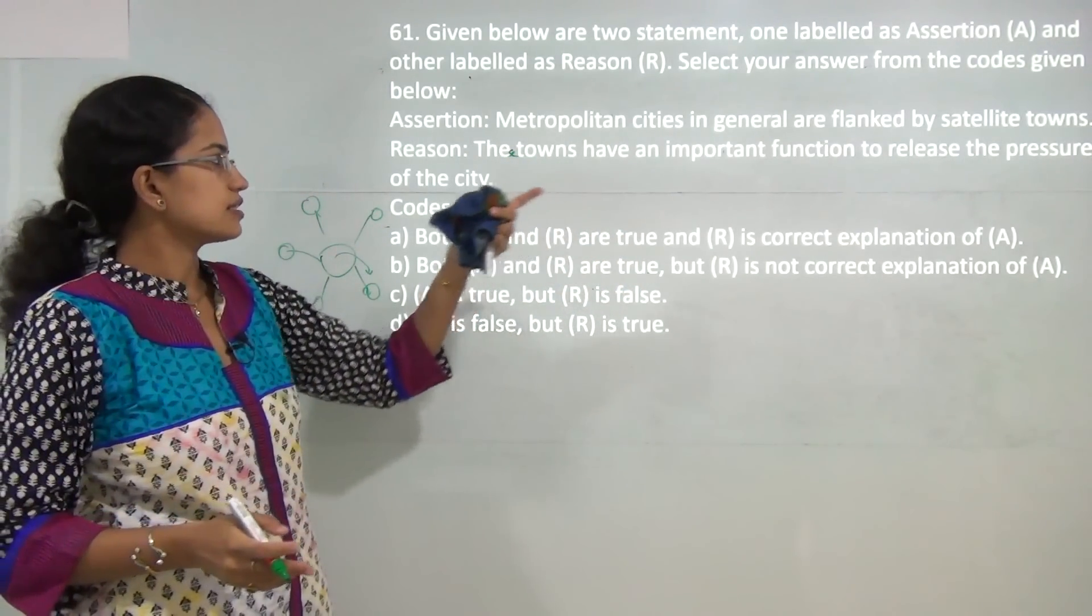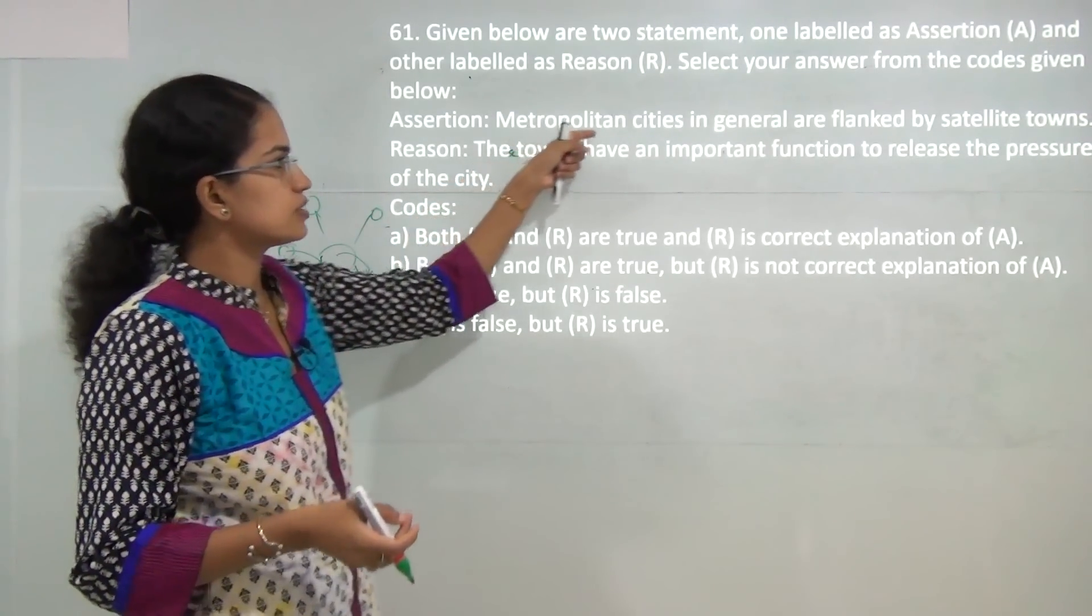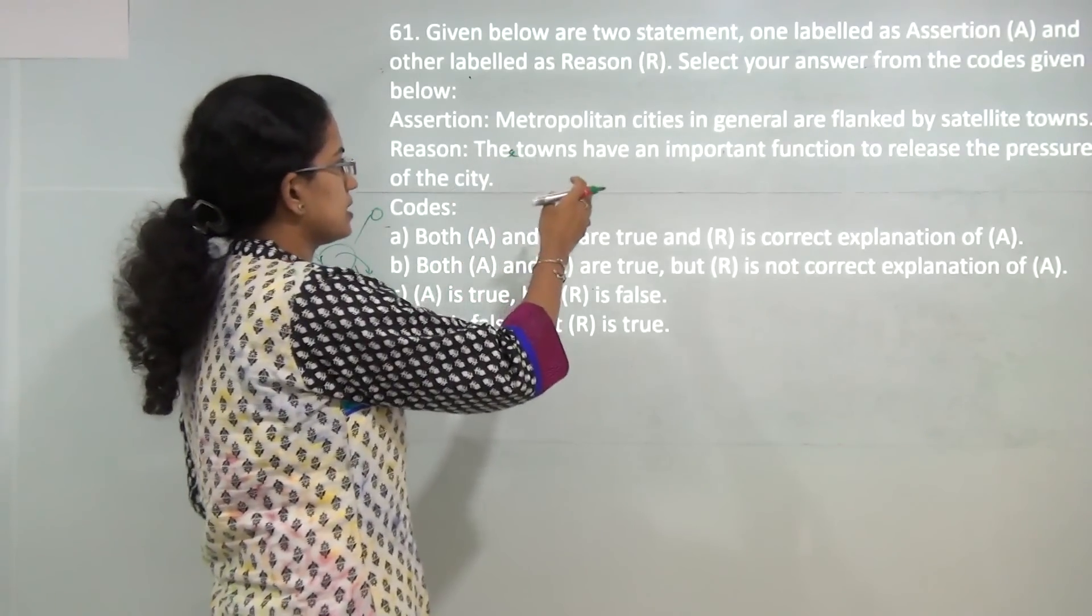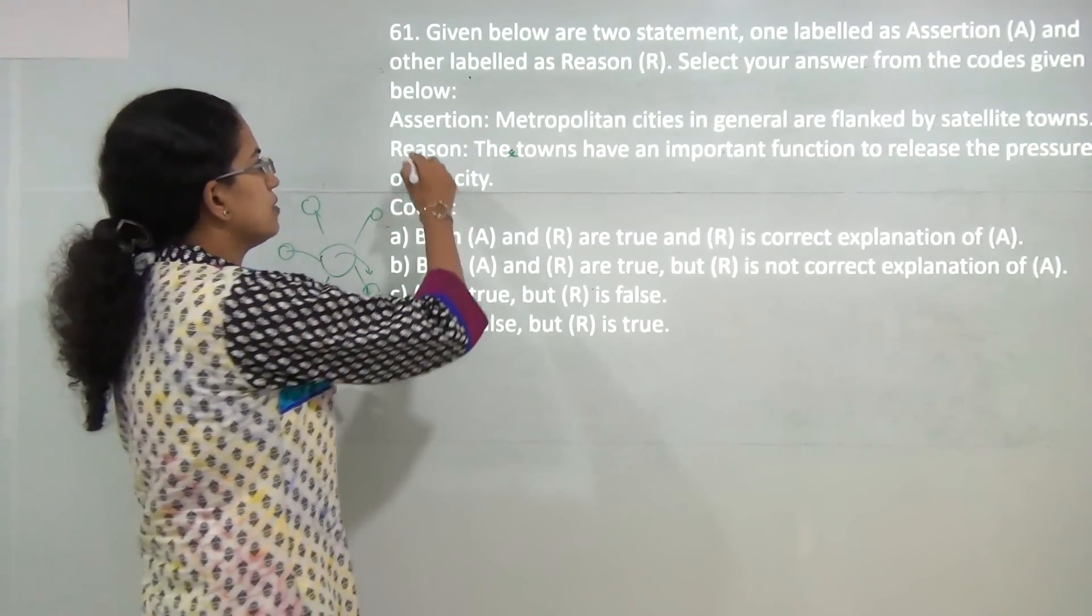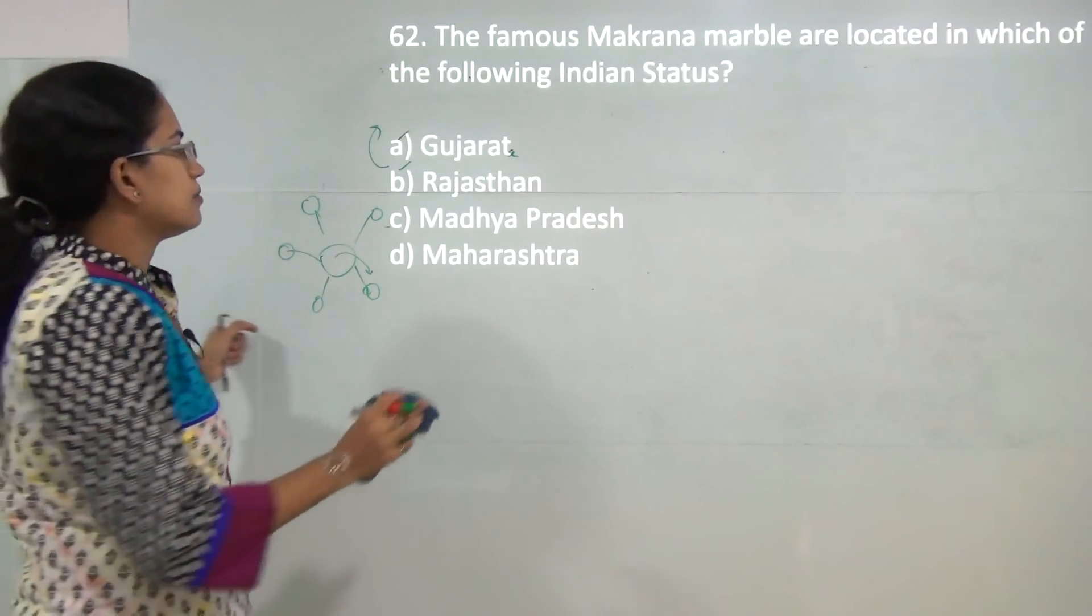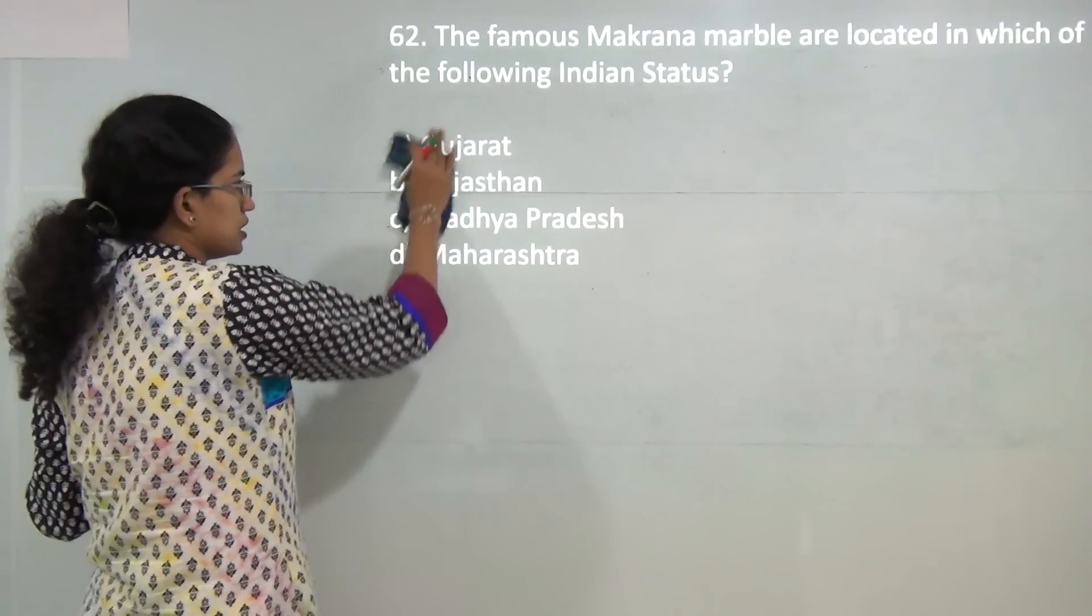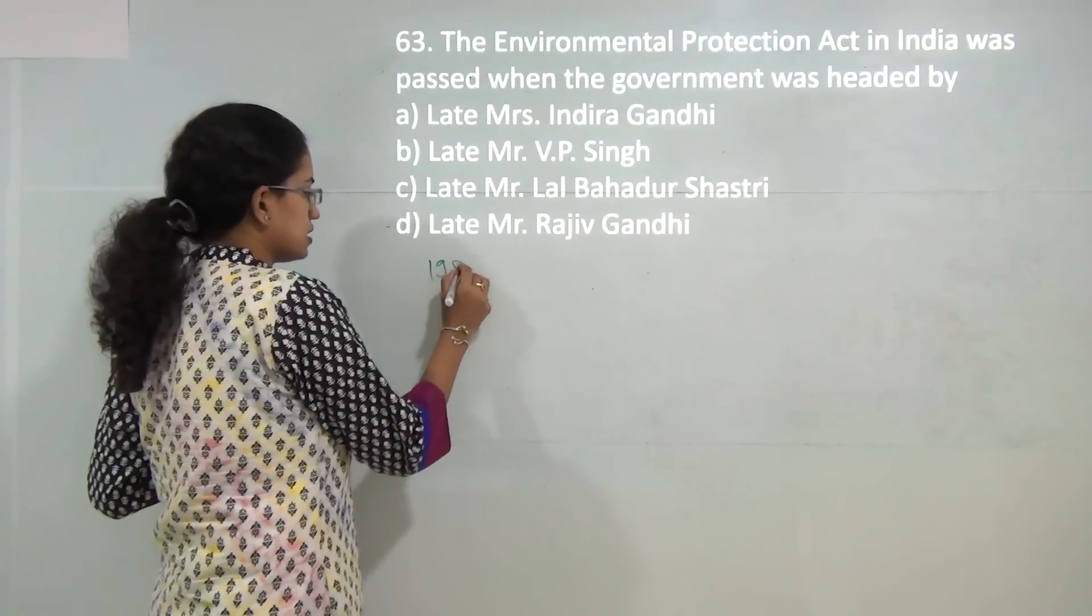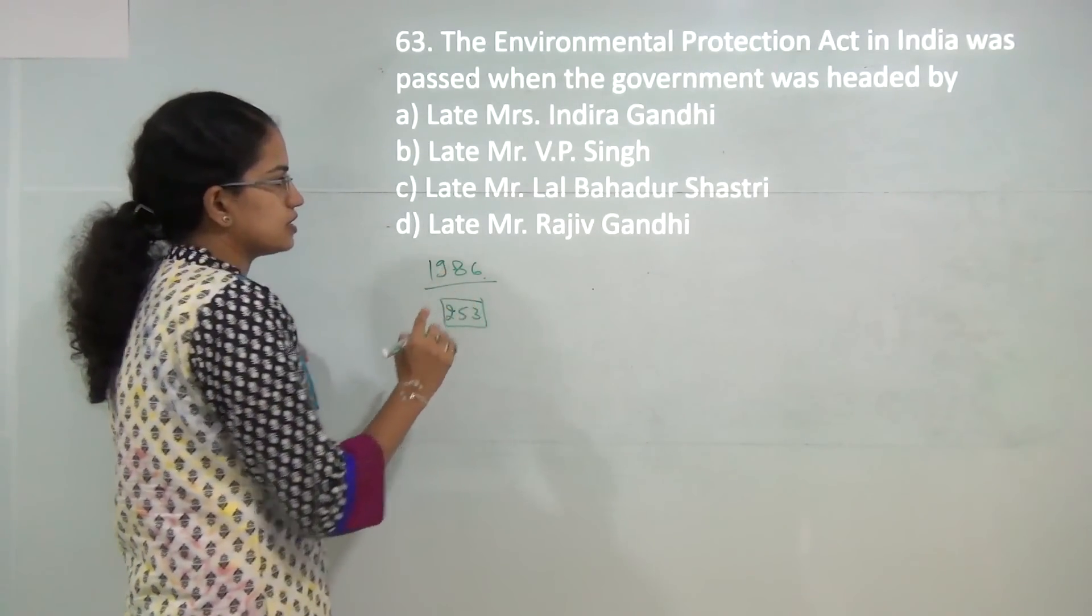The statement says that the metropolitan city is flanked by small satellite towns around. This is developed to release the pressure from the main city - that is correct. However, if we go to the reason independently, we understand that towns, cities, metropolitan, and satellite are all four different concepts. Most probably the examiner is explaining that these towns have a function of releasing the pressure of the city. If that is what he is asking, we have assertion and reason as correct, and reason as correct explanation for assertion. Next, Makrana marbles, which were the basis for Taj Mahal, are from Makrana mines in Nagpur in Rajasthan.